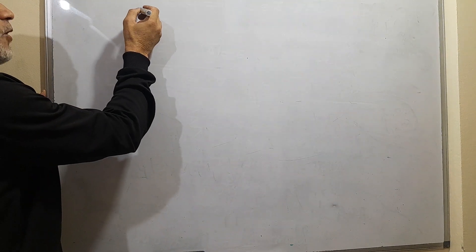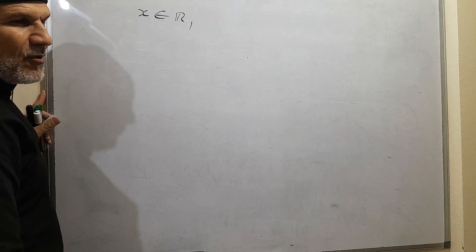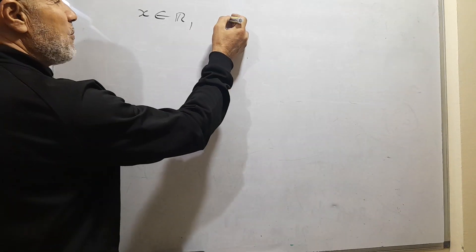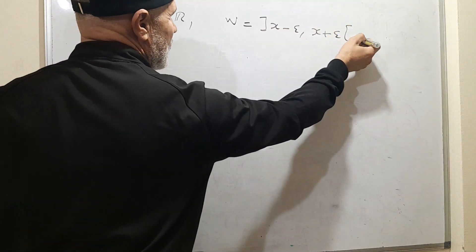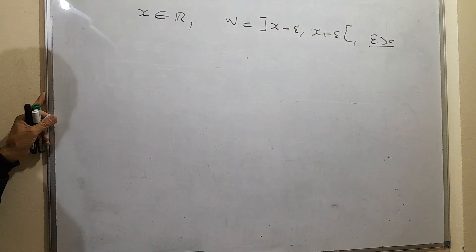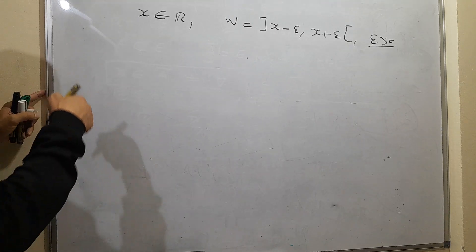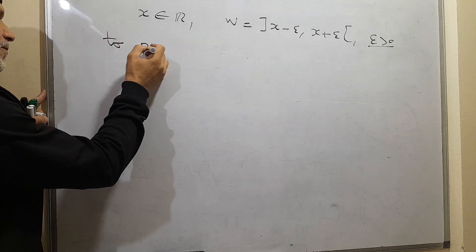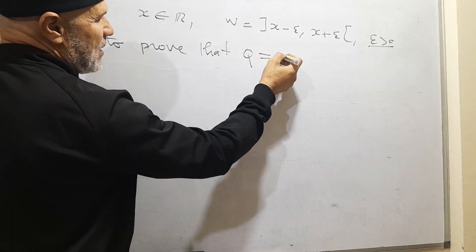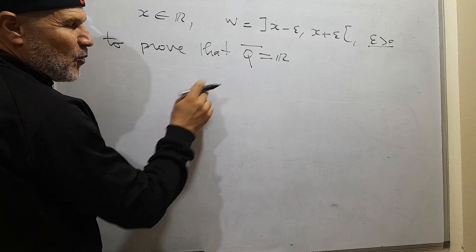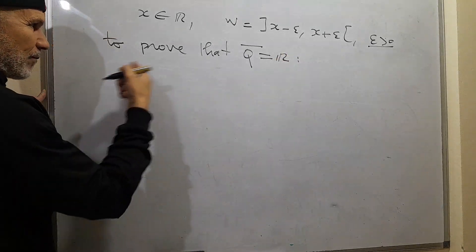We start for X in R. Without loss of generality, we can suppose that the neighborhoods of X can be written as (X − ε, X + ε) for ε > 0. To prove that Q is dense in R, we have to prove that the closure of Q is equal to R.